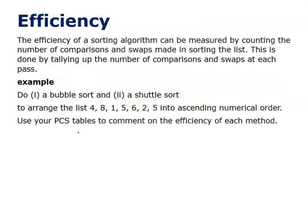Now here is a question that perhaps we need to think about as well. This is a bunch of numbers: 4, 8, 1, 5, 6, 2, 5. My suggestion is we should try to sort this using the bubble sort and sort it using the shuttle sort as well. And when we've done that, we can have a look at the PCS table.